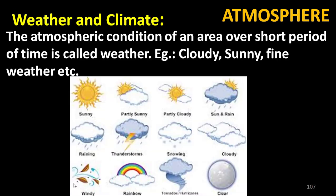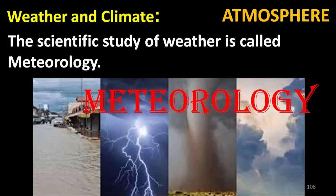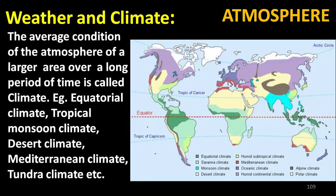The atmospheric condition of an area over a short period of time is called weather — for example, cloudy, sunny, or fine weather. The scientific study of weather is called meteorology.